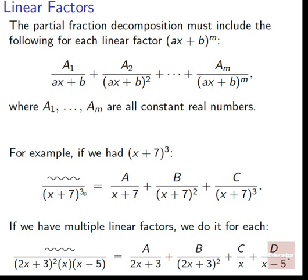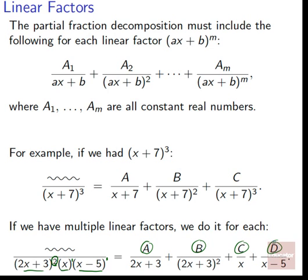If we have multiple linear factors, we do it for each one. So if we have (2x+3)² · x · (x−5), we get A over (2x+3) + B over (2x+3)² + C over x + D over (x−5). Each of A, B, C, D is just a constant number we'll figure out later.